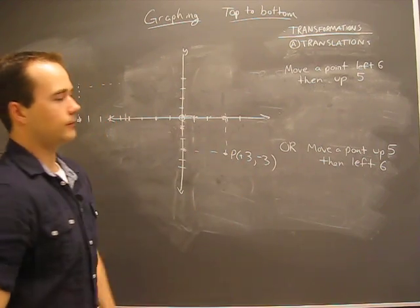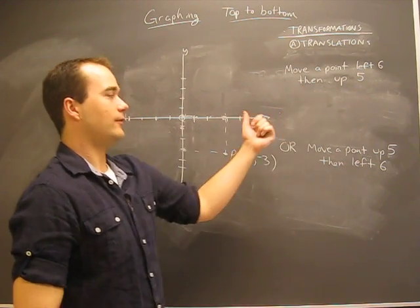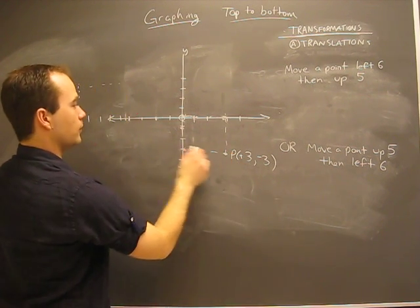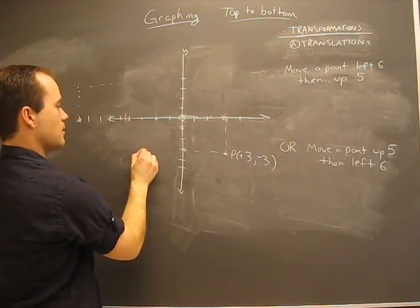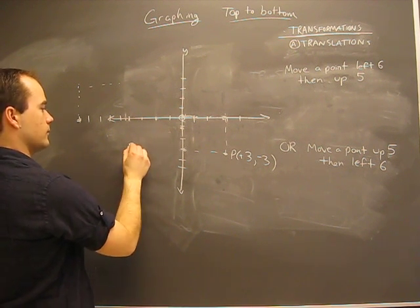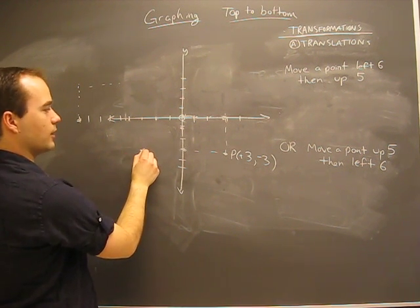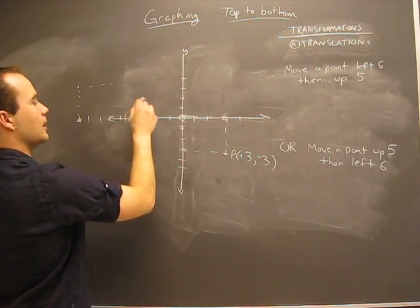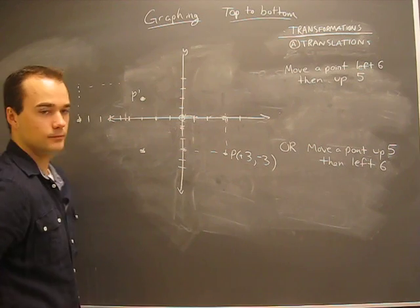So what happens if we move a point left 6 and then up 5? Well, if we move it left 6, we end up here. So that's there and then we gotta move it up 5: 1, 2, 3, 4, 5. We end up here, here at P prime.